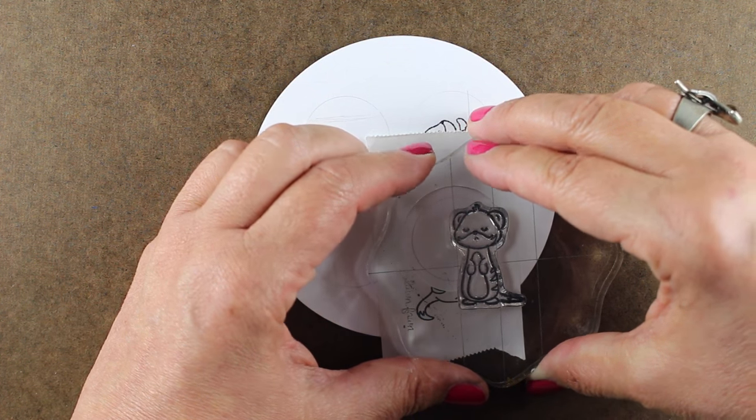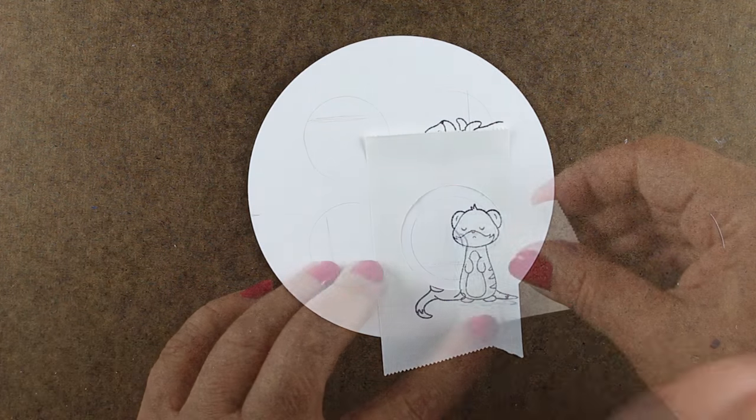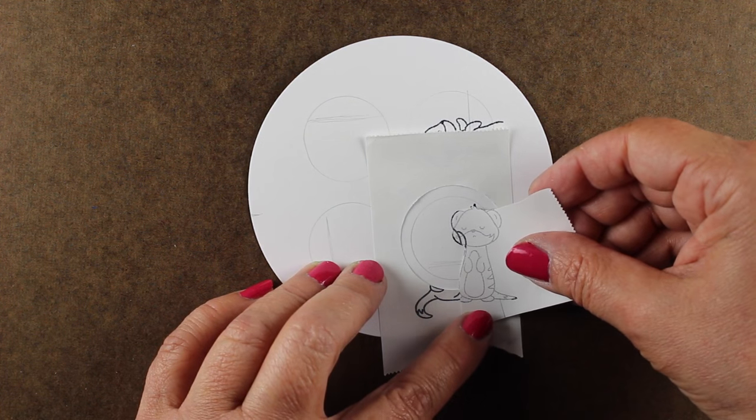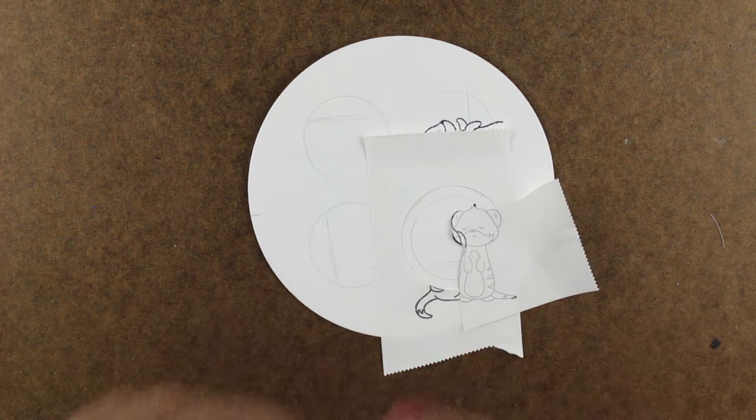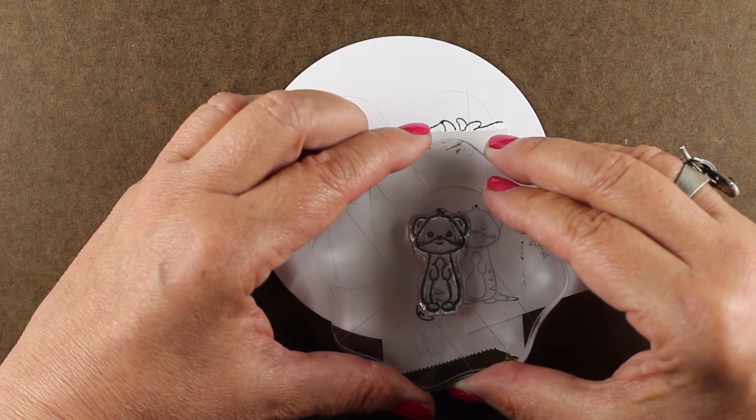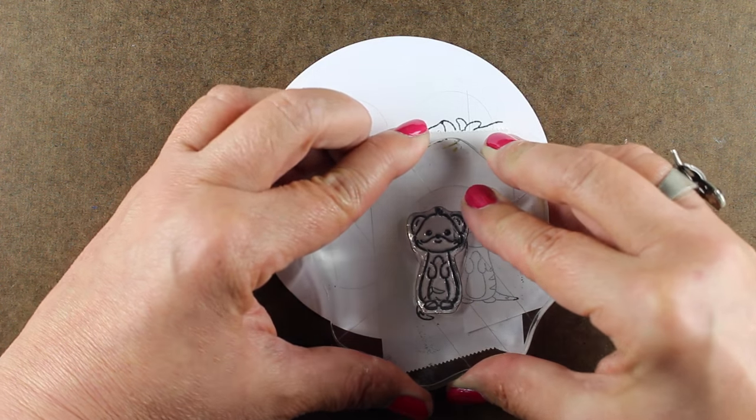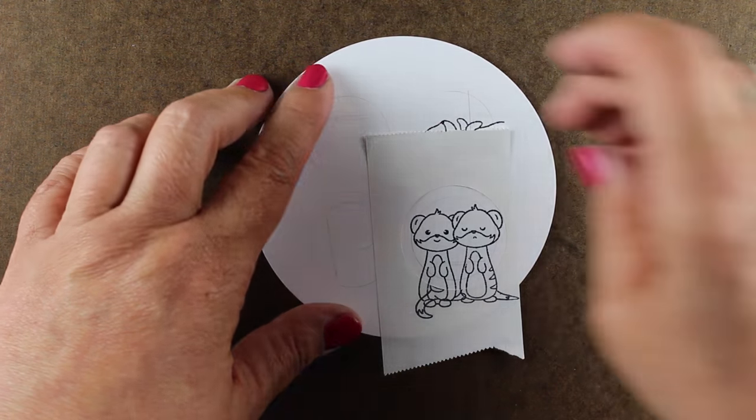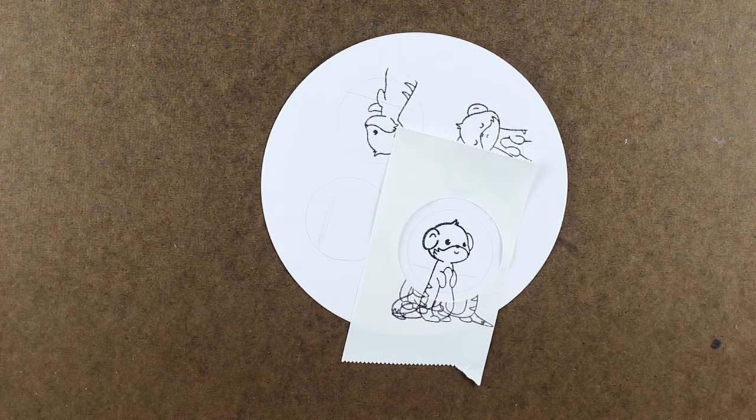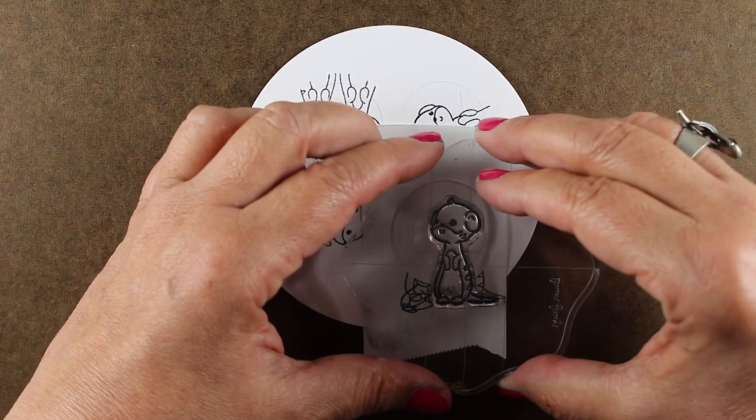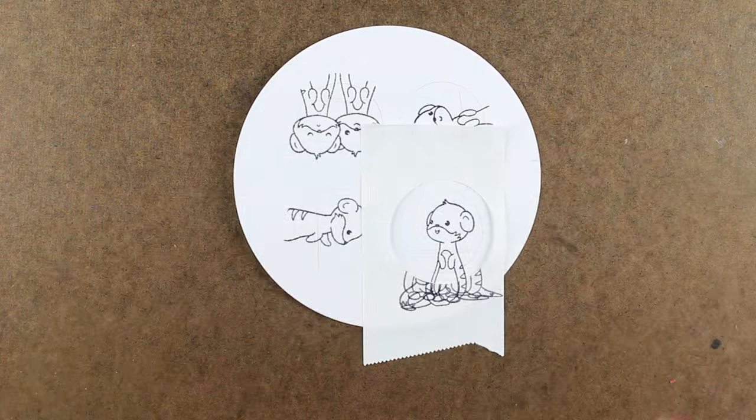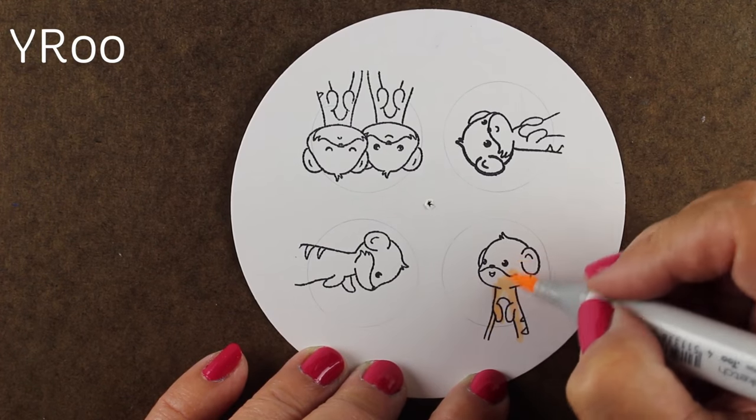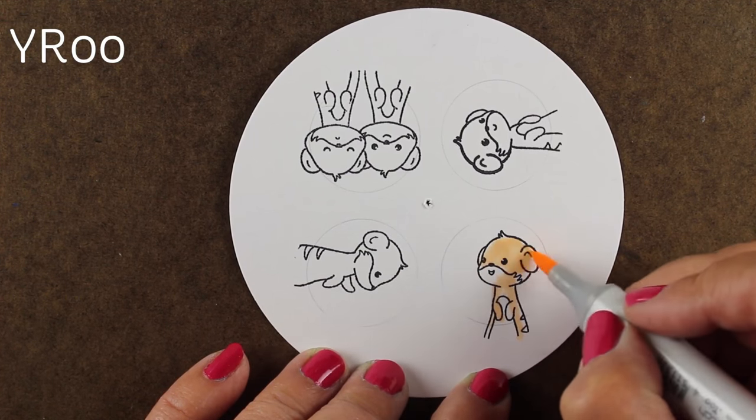So I'm stamping my prairie dogs, making sure that I know where that horizontal is so that they are all facing the right direction when I spin them around. Some of them I'm putting two prairie dogs in. I didn't use the one with the little baby prairie dog. There's like little teeny tiny ones in the stamp set too. I'm just going to stamp them all in there so they are ready to color.